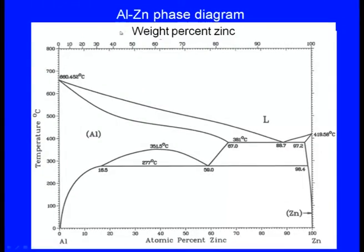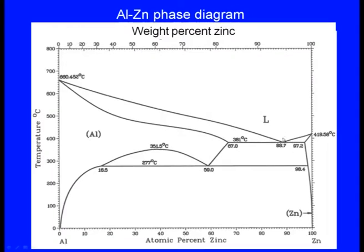This is the aluminum-zinc phase diagram. You can see here, this is 100% zinc, and at this point may be 90% zinc and 10% aluminum. Here we can see a eutectic reaction — the reaction having the lowest melting point — and this is at about 382 degrees centigrade.